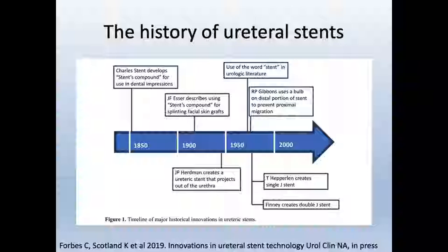I wanted to start with a brief history of ureteral stents. Stents actually started as a gum paste and somehow that translated into a tube and finally began to be used in urology. It's not really until about 1978 that people were more widely accepting of stents, primarily because the original stents had a lot of issues with migration and expulsion. Since the double J stents were created first by Finney, they've been widely used by urologists.